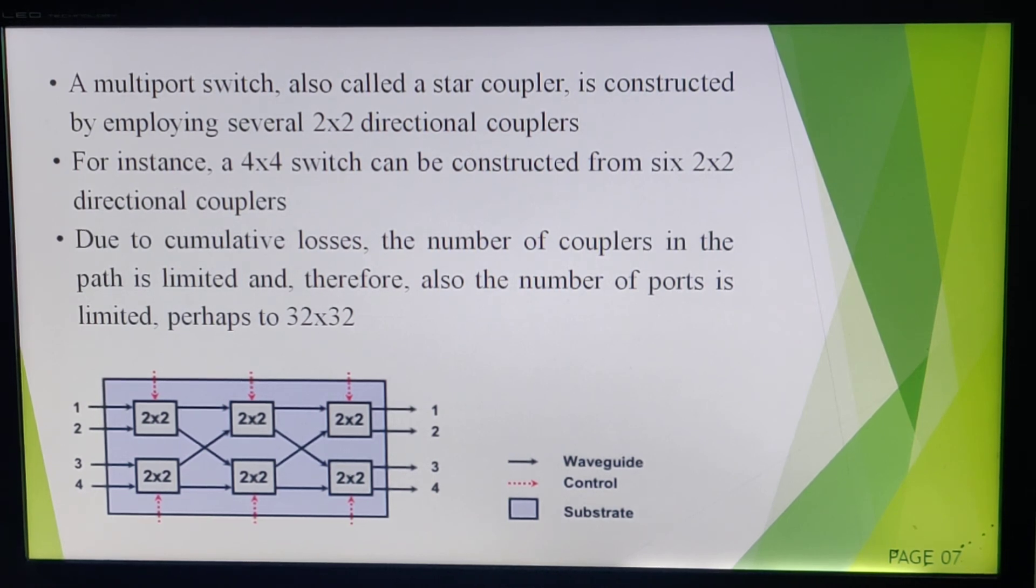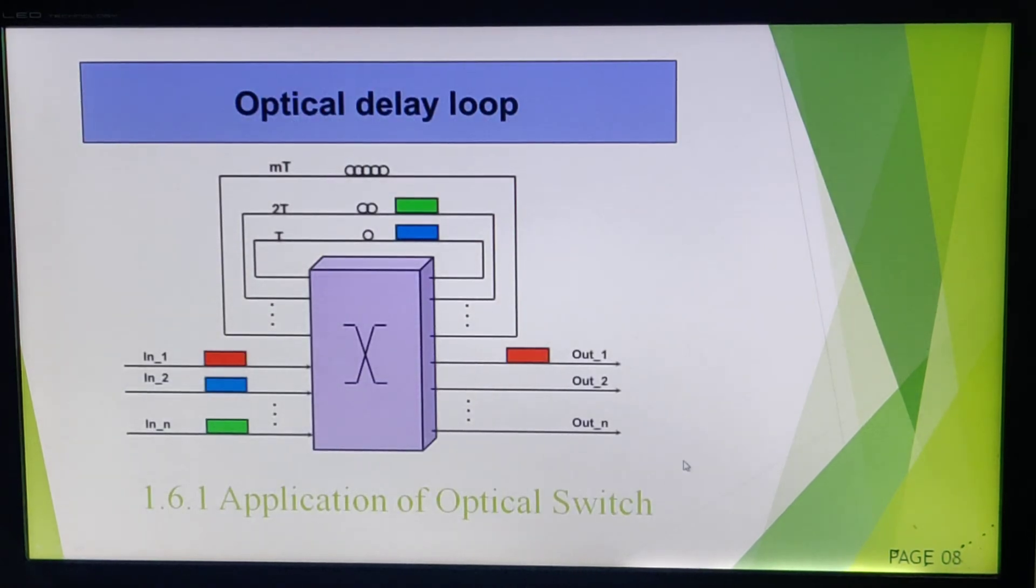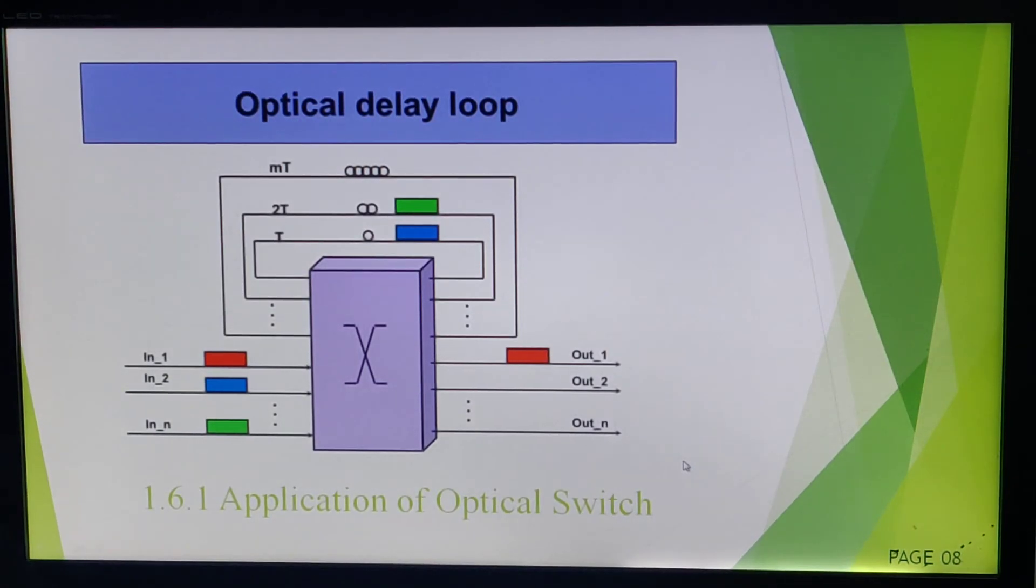So now this is a four-port network: four input and four output ports. So input-output switching will be done by using this two-by-two directional coupler. This is one of the examples of optical switch.